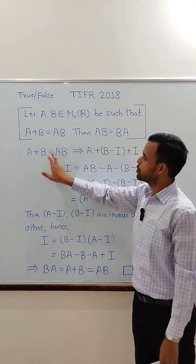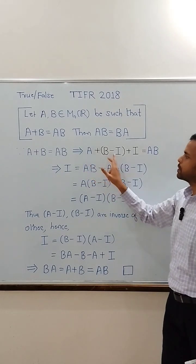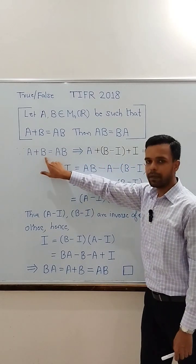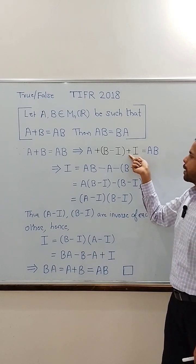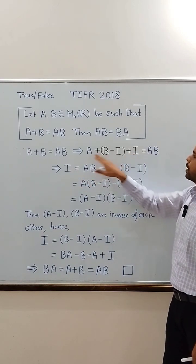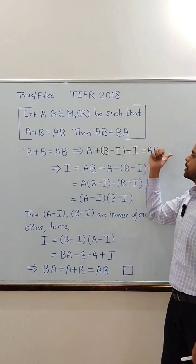Observe that A plus B equals AB can be written as A plus B minus I plus I equals AB. We have just replaced B with B minus I plus I. From here we can write identity matrix as I equals AB minus A minus B minus I.